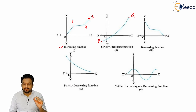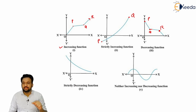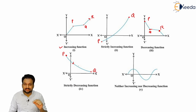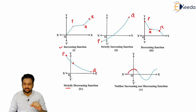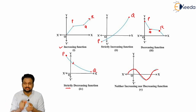Now you can see the decreasing function. This function decreases from P to Q, then from Q to R it gives a constant value — so it is not decreasing there — and after R it starts to decrease again. That is a decreasing function. Another graph shows a function that is strictly decreasing — it continuously decreases from P to Q with no constant value at any point. And some functions are sometimes increasing and sometimes decreasing — those are known as neither increasing nor decreasing functions.